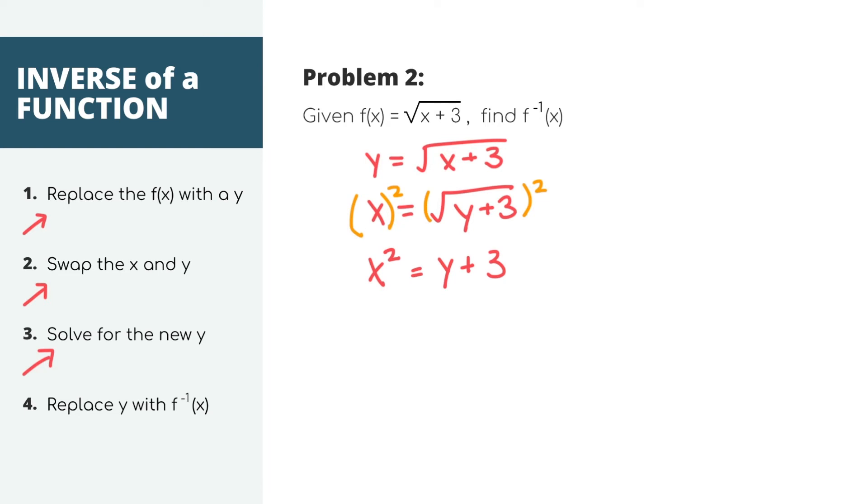And now you can see we're almost there. y is almost by itself except for this plus 3. And in order to undo that plus 3, we need to do the opposite and minus 3 from both sides. And we'll end up with x squared minus 3 equals y, which is pretty much our answer. Our last step is just to put it back into the correct notation by replacing this new y with the inverse of f of x. This is our answer. The inverse of f of x is x squared minus 3.